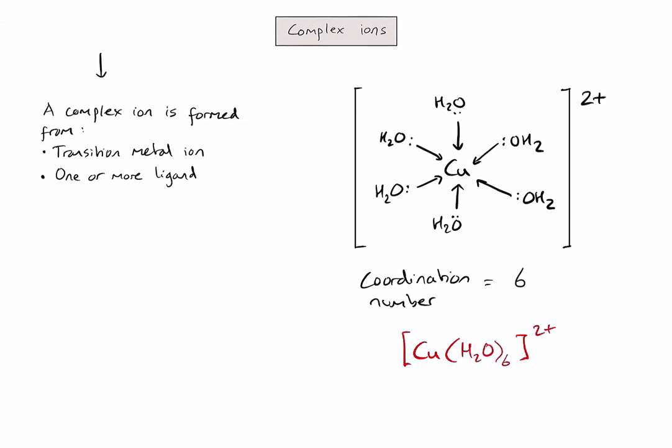There are a number of other ligands we need to be aware of, which we could replace the water molecules with if they are added to the solution as well. Some common examples we might see in IB chemistry are the chloride ion, the hydroxide ion, ammonia molecules and carbon monoxide molecules.